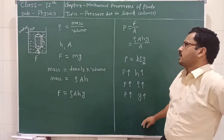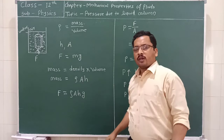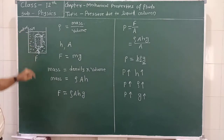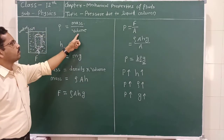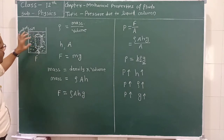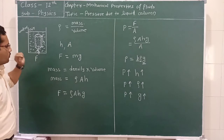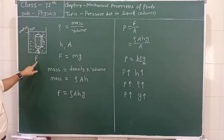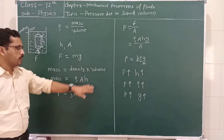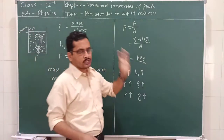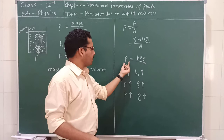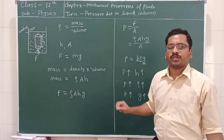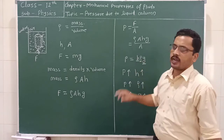So on these three factors — height, density, and gravity — the pressure of the liquid column depends. To summarize: a liquid is in a container, an imaginary cylinder of area A and height H is considered, and the force on it equals the weight mg where mass equals density times volume. We derived the equation for force, and using pressure equals force divided by area, we derived the relation P equals H rho g. Using this equation we can determine the pressure at any height if we know the density and gravity at that place.